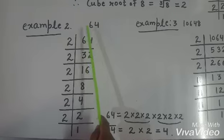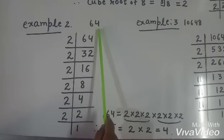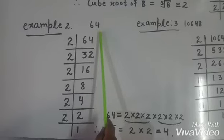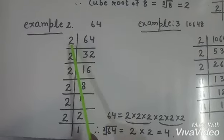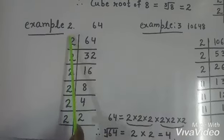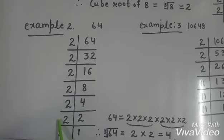Now other example is 64. First of all find out the prime factorization of 64 which is 2, 2, 2, 2, 2, 2. 2 is repeated 6 times.